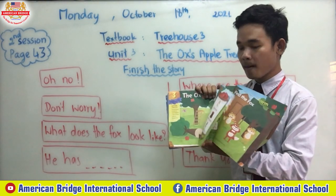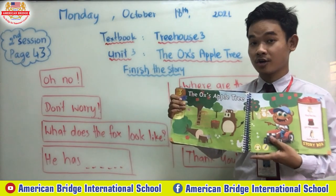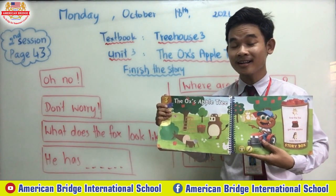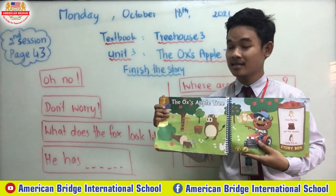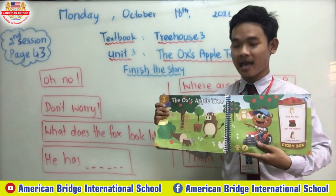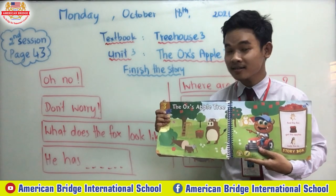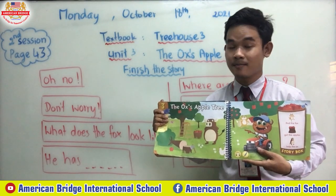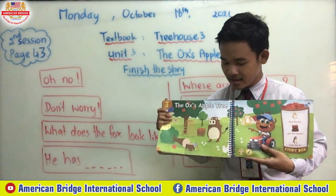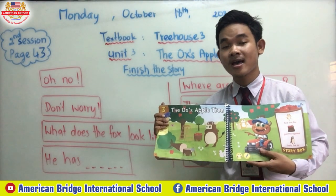Now, can you tell teacher again everyone — who is the main character? Monty, right? Because he tells us the story and he also plays a lot in the stories as well. So who are the other characters? We have the fox — the one who stole the apples and also cut down the apple tree — and the ox, the owner of the apple farm. We also have duck, bear, and mouse.